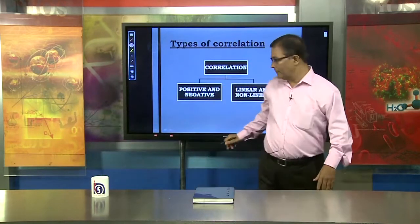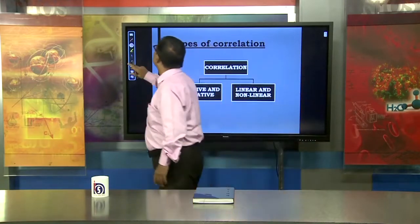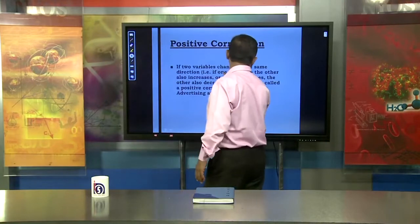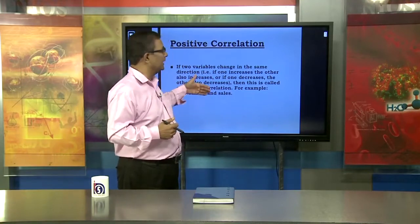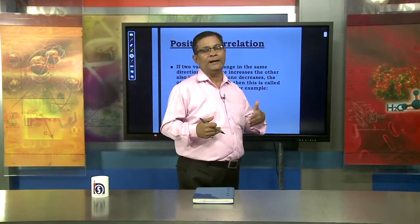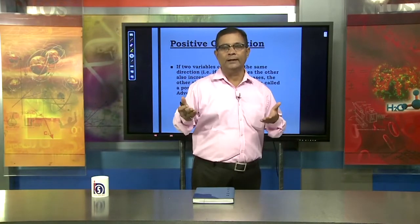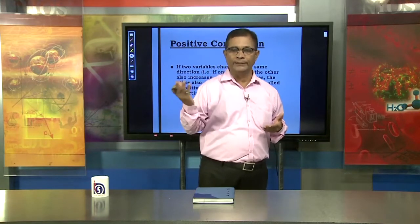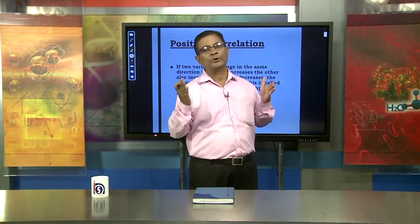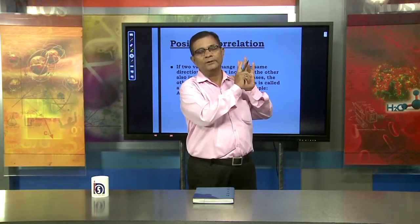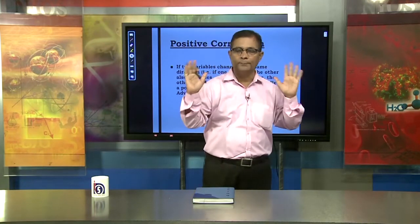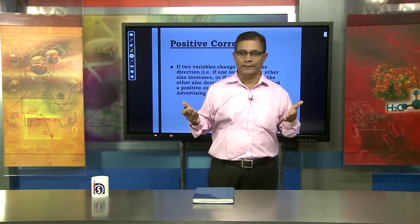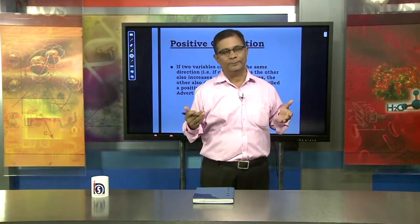The description given here includes an example: a particular company decided to increase the advertising amount and, as a result, the company saw that the volume of sales increased. So advertisement is the x variable and sales is the y variable. An increase in advertisement leads to an increase in the sales of a commodity of that particular company — this shows positive correlation.